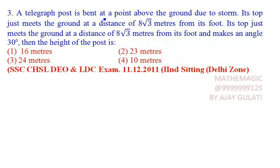A telegraph post is bent at a point above the ground due to storm. Its top just meets the ground at a distance of 8 root 3 meters from its foot and makes an angle of 30 degree. Then the height of the post is...